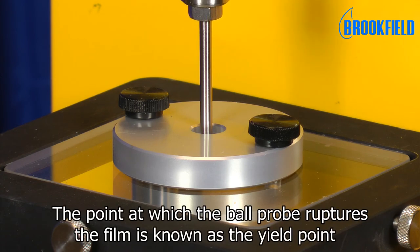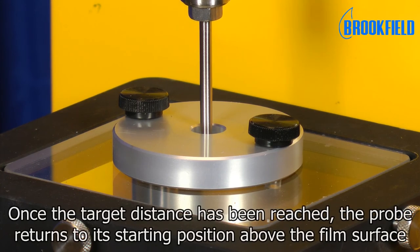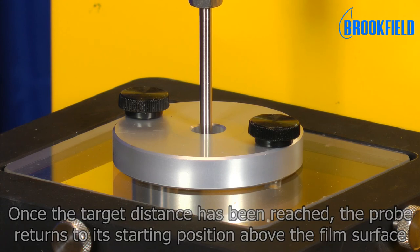The point at which the ball probe ruptures the film is known as the yield point. Once the target distance has been reached, the probe returns to its starting position above the film surface.